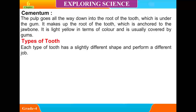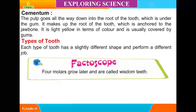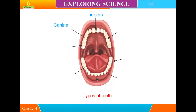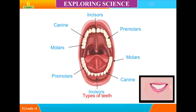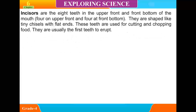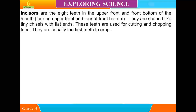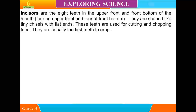Types of Tooth. Each type of tooth has a slightly different shape and performs a different job. Incisors are the eight teeth in the upper front and front bottom of the mouth — four on the upper front and four at the front bottom. They are shaped like tiny chisels with flat ends. These teeth are used for cutting and chopping food. They are usually the first teeth to erupt.